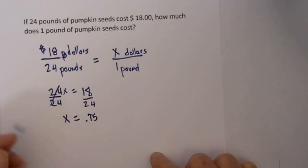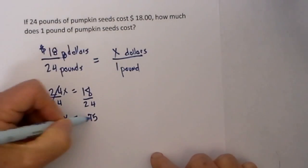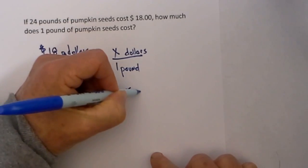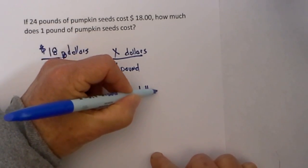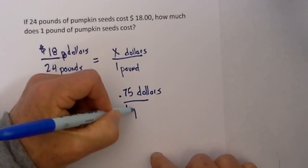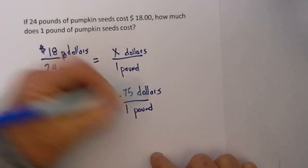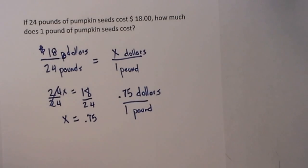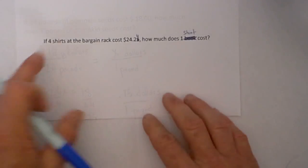These cancel out and x is equal to 18 divided by 24 which is 0.75. Let's plug it back in. Take the 0.75 and place it in the x. It is $0.75 equals 1 pound of pumpkin seeds. In other words, 1 pound is equal to $0.75, which is 75 cents.